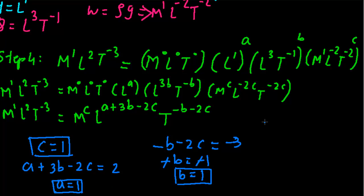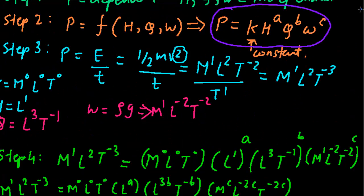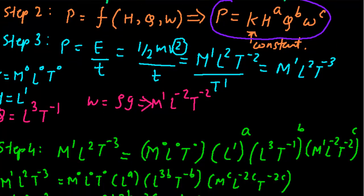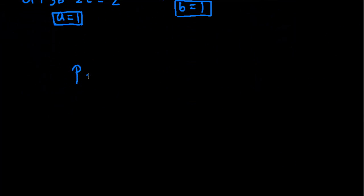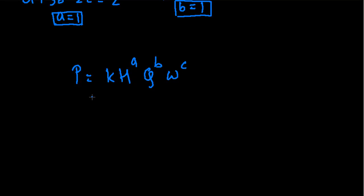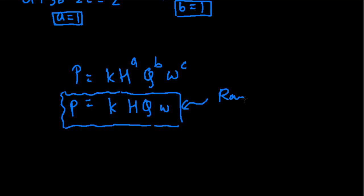So you have values of all three: a equal to 1, b equal to 1, c equal to 1. All you need to do is put them back in this equation. Power P equals k H raised to 1, Q raised to 1, and W raised to 1. This is our final answer according to Rayleigh's method.